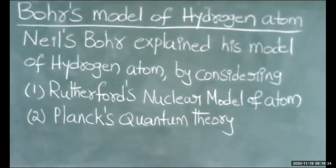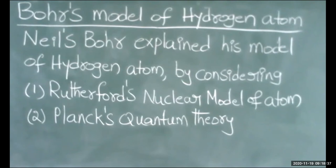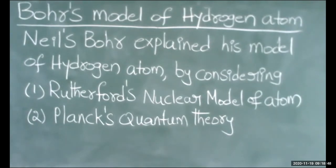We have already discussed two atomic models: Thomson's model of atom and Rutherford's nuclear model of atom. Both theories have many drawbacks and have failed. As a result, the next theory proposed to explain the structure of atom is Bohr's model of hydrogen atom.